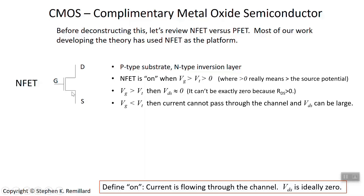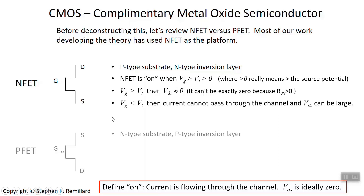When the gate is below threshold, there's no inversion layer and current cannot pass through. Likewise, the drain-source voltage is easily very large because you can't get any current through — you can turn that drain-source voltage up as high as you want.